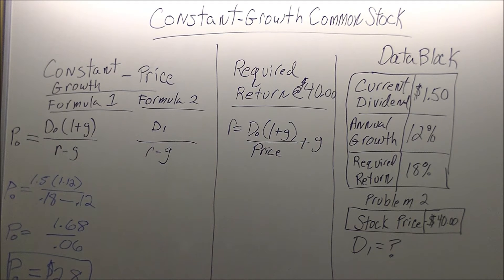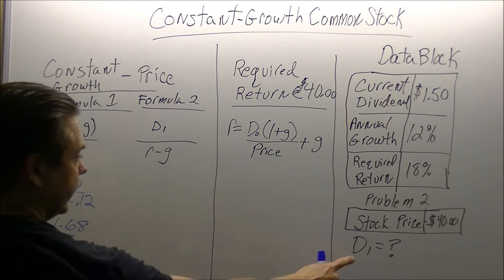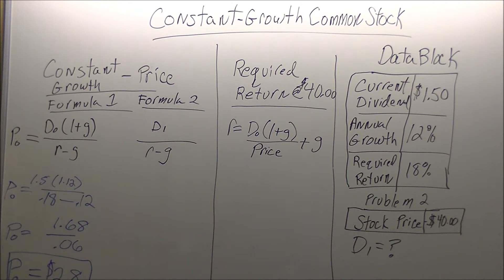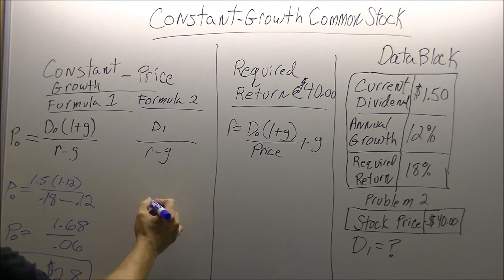Now, some problems are going to give you what's called D1. D1 is a dividend in a year. A dividend in a year is quite simply just the numerator, D0 times 1 plus the growth. That will give us our D1. In this formula, they're giving us what the current price of the dividend is. If it's the current price, we use this one. If they say dividend in a year, we're going to use our D1.